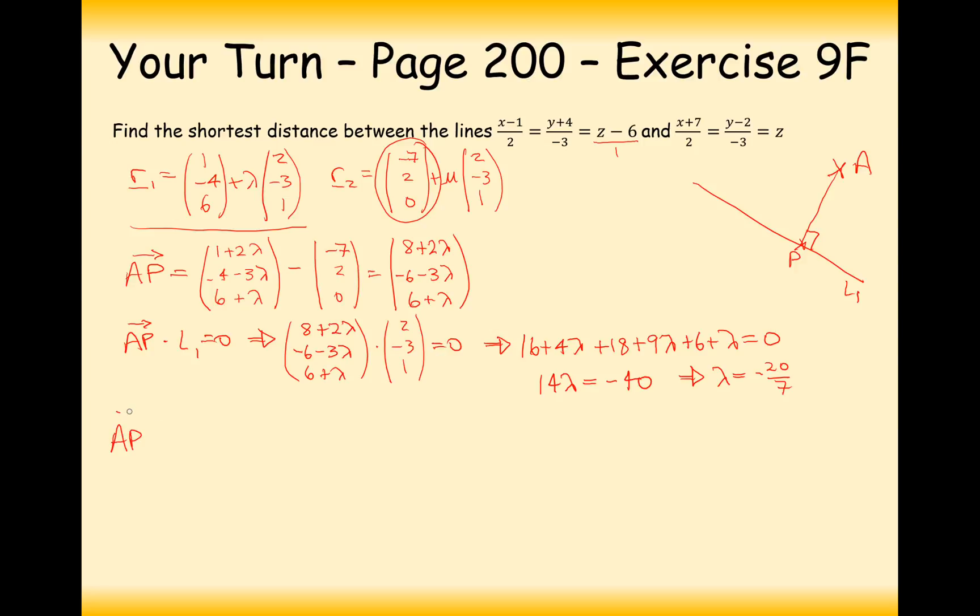So now all I have to do is substitute this lambda equals minus 20 over 7 in the direction vector from A to P. So it's going to be... I'm substituting this into the wrong one. I need to substitute it into this one here. Let's start that again. So 8 plus 2 lots of minus 20 over 7. I'm doing this all in my calculator now. Don't want to make any mistakes. Use your calculator. So that'll be 16 over 7.